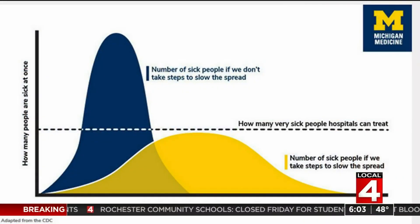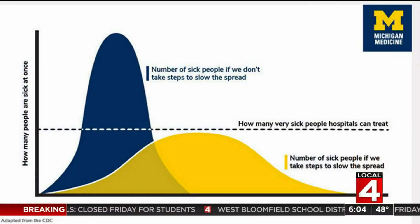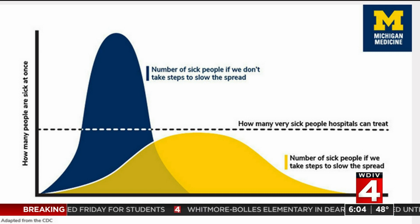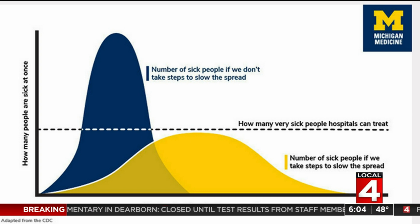Well, there are actually several variations of this going around, but one is created by the University of Michigan that's been shared a number of times. Take a look — it shows two curves. The blue one shows a rapid increase in cases if measures are not taken in the community to reduce spread. The yellow demonstrates the slower growth of cases over time that occurs with measures to decrease transmission. Now this concept is not new.